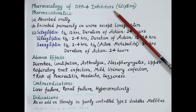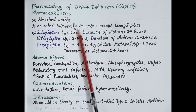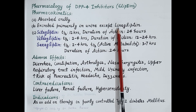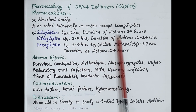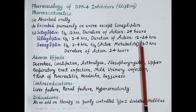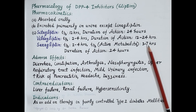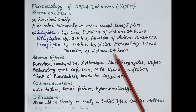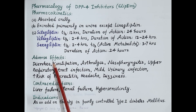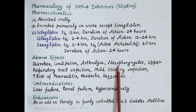A few important pharmacokinetic parameters of DPP-4 inhibitors: these drugs are administered orally and are primarily excreted in urine, except linagliptin. Sitagliptin has a half-life of 12 hours and duration of action of 24 hours. Vildagliptin has a half-life of 2 to 4 hours and duration of action of 12 to 24 hours. Saxagliptin has a half-life of 2 to 4 hours; it produces active metabolites with a half-life of 3 to 7 hours and duration of action of 24 hours. Adverse effects include diarrhea, constipation, arthralgia, nasopharyngitis, upper respiratory tract infection, and mild urinary infection.